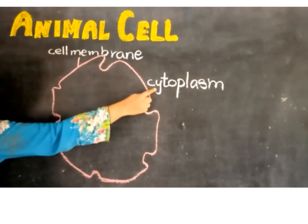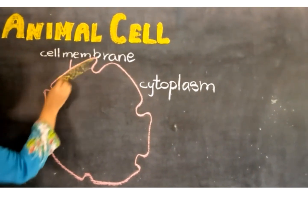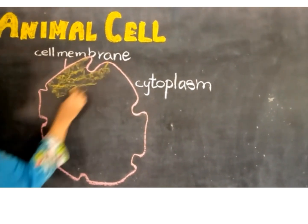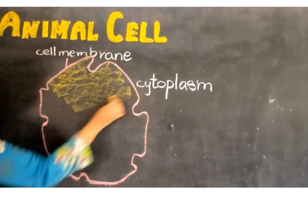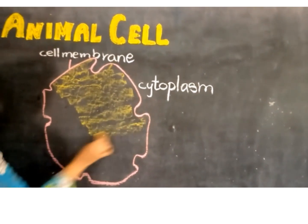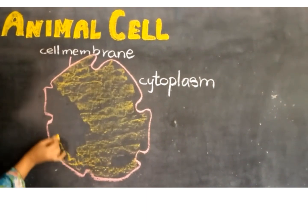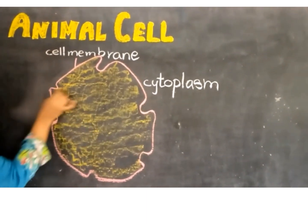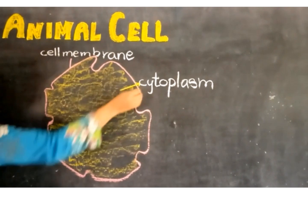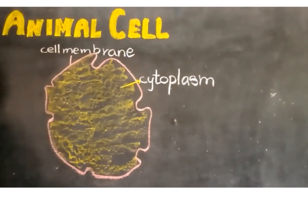The cytoplasm is a jelly-like fluid which fills the interior of the animal cell. The cell organelles and the cell inclusions are suspended inside the cytoplasm.